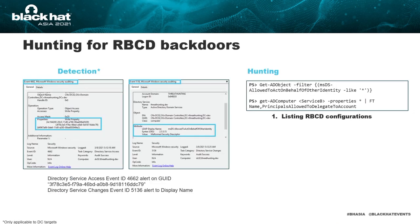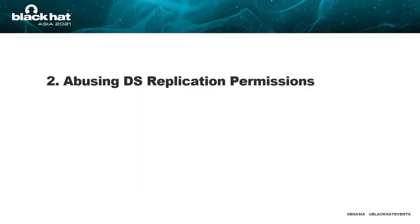What can defenders do to detect RBCD? On the domain controller, if the audit directory service access policy is enabled, it provides a low-level audit trail of changes made to objects in Active Directory — though the event volume is high for this group of logs. Event IDs 4662 and 5136 will both track and can be set to alert on changes made to DS objects. Hunters can use PowerShell to list objects which have the 'msDS-AllowedToActOnBehalfOfOtherIdentity' property set, then review those entries for any malicious activity.